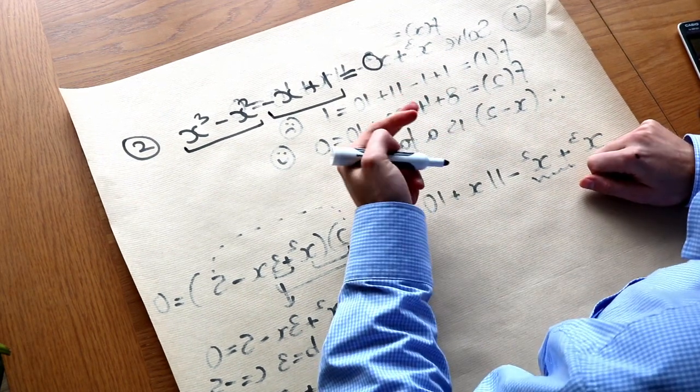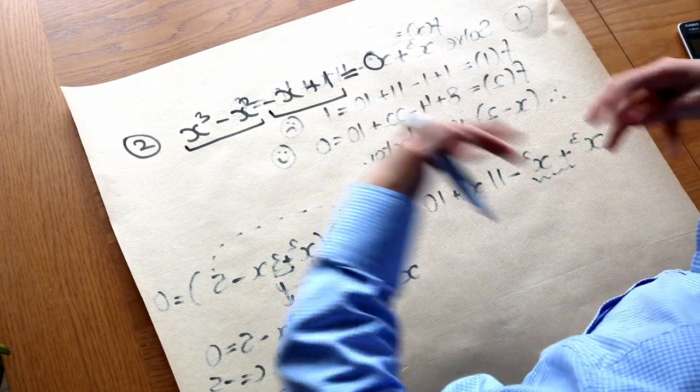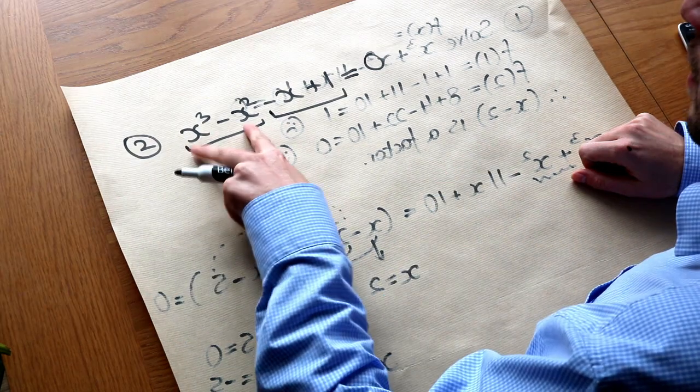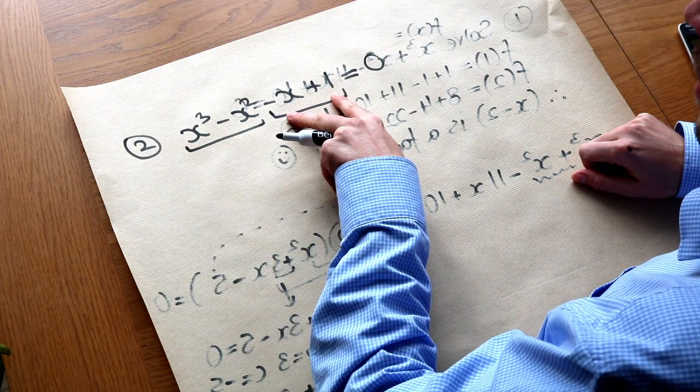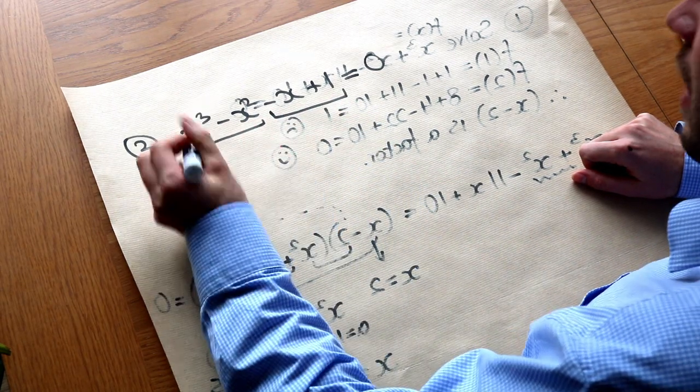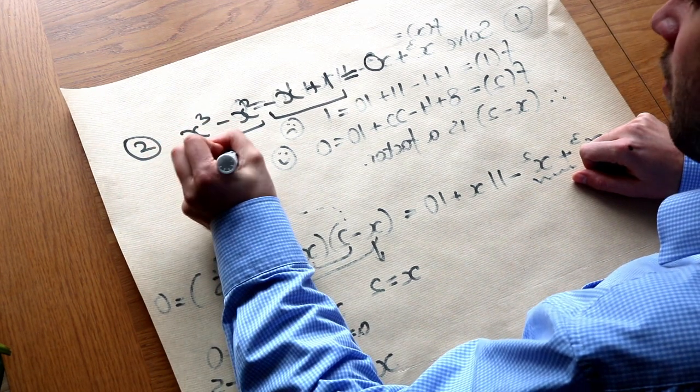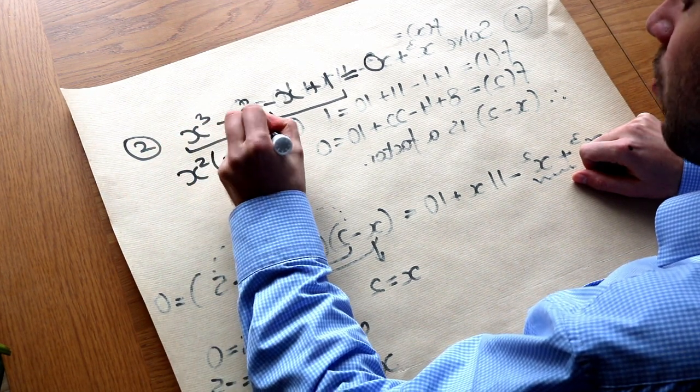And if you're familiar with the idea of splitting the term for quadratics, then you have a notion of this already. So let's factorise this first pair of terms and the second pair of terms. Can you see that these have a common factor of x squared? So I'm going to factorise that out to get x squared brackets x minus one.